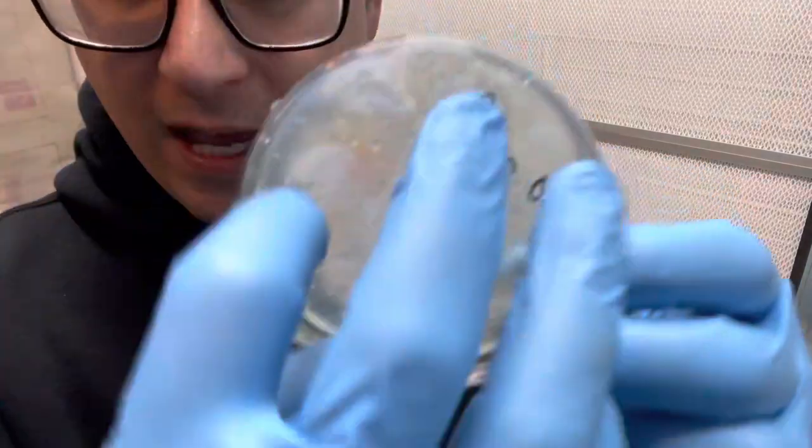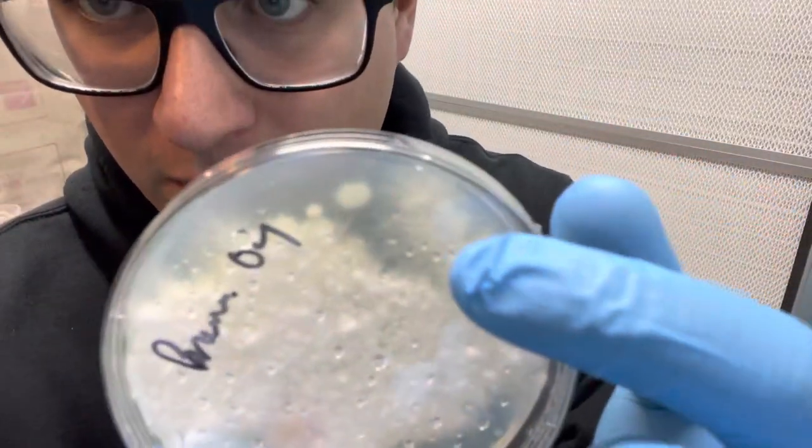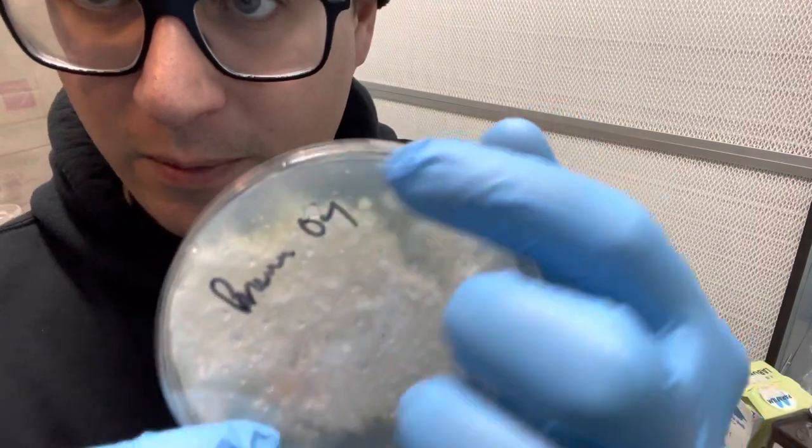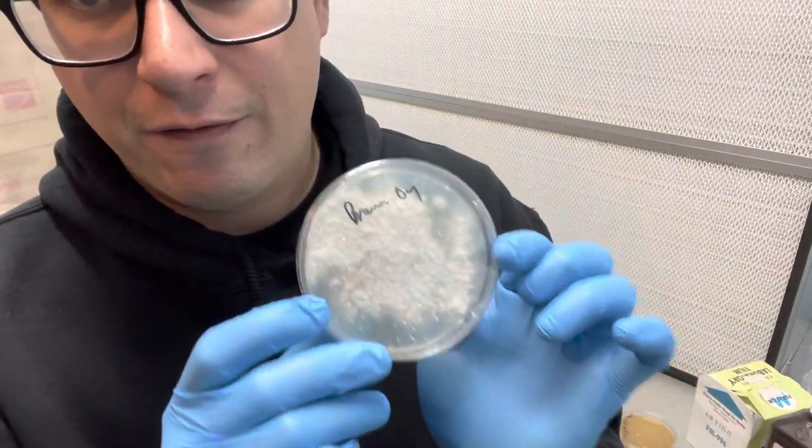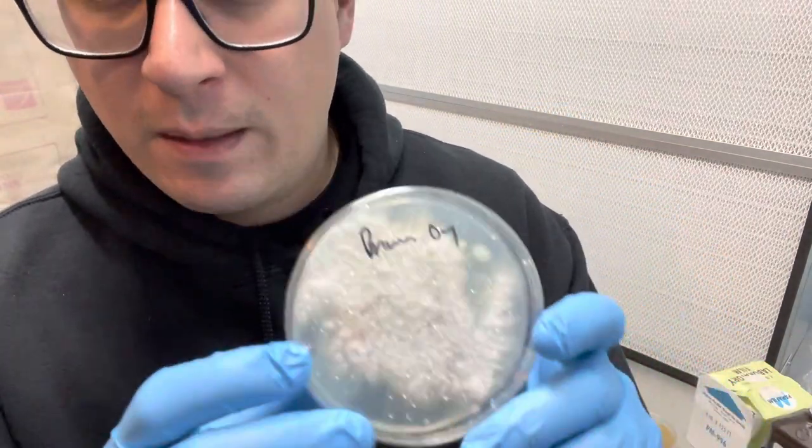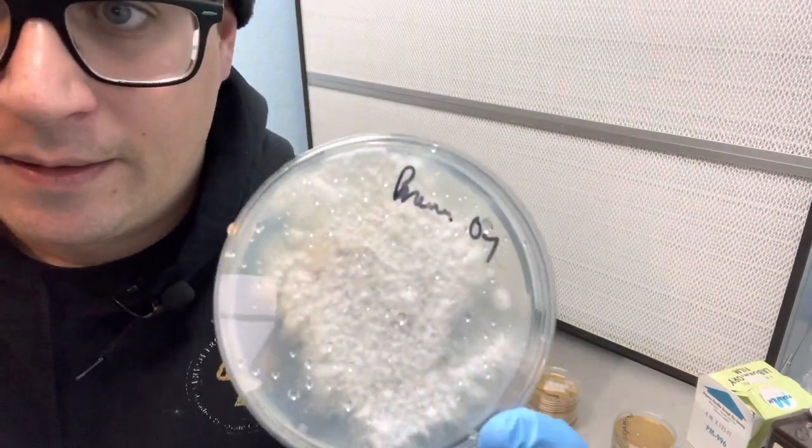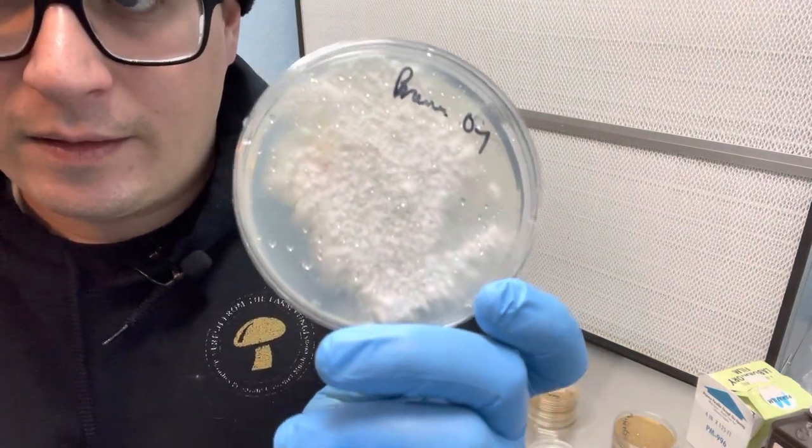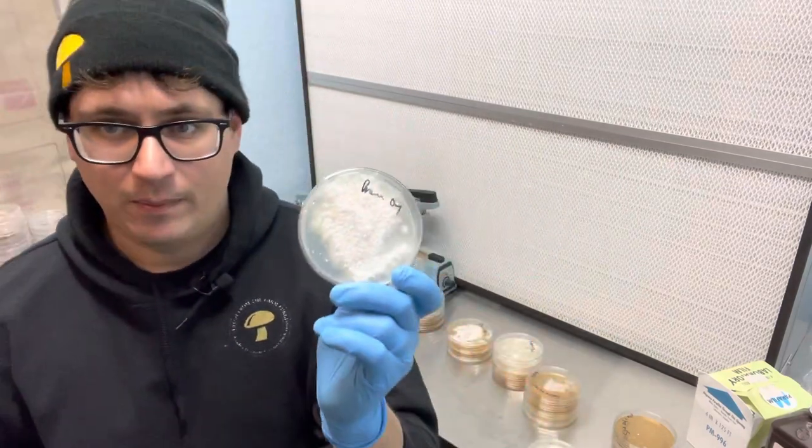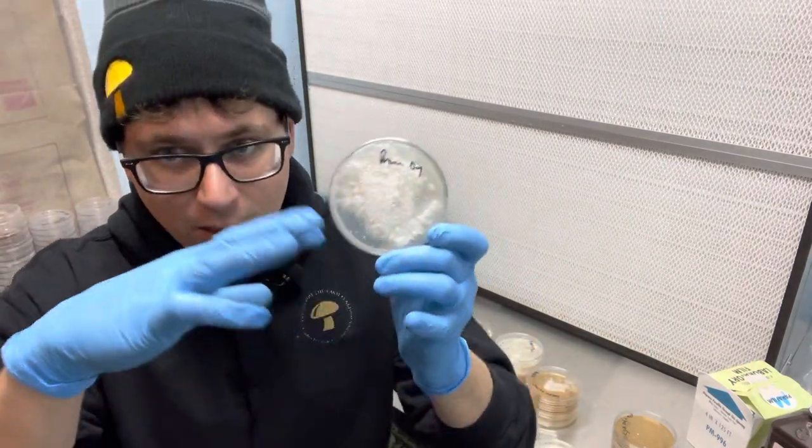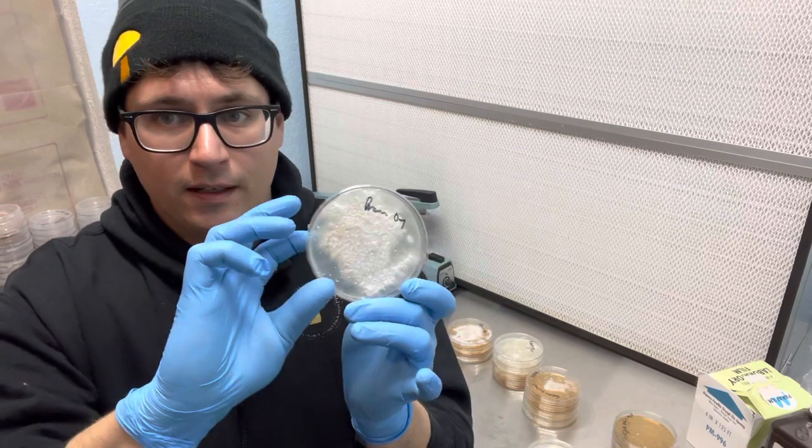The spores will kind of mate with each other, and then you can go through and select different healthy regions to create different phenotypes. But I wanted to point out that if you look very carefully, you can't see any bacteria because the mushroom mycelium has overgrown that bacteria.